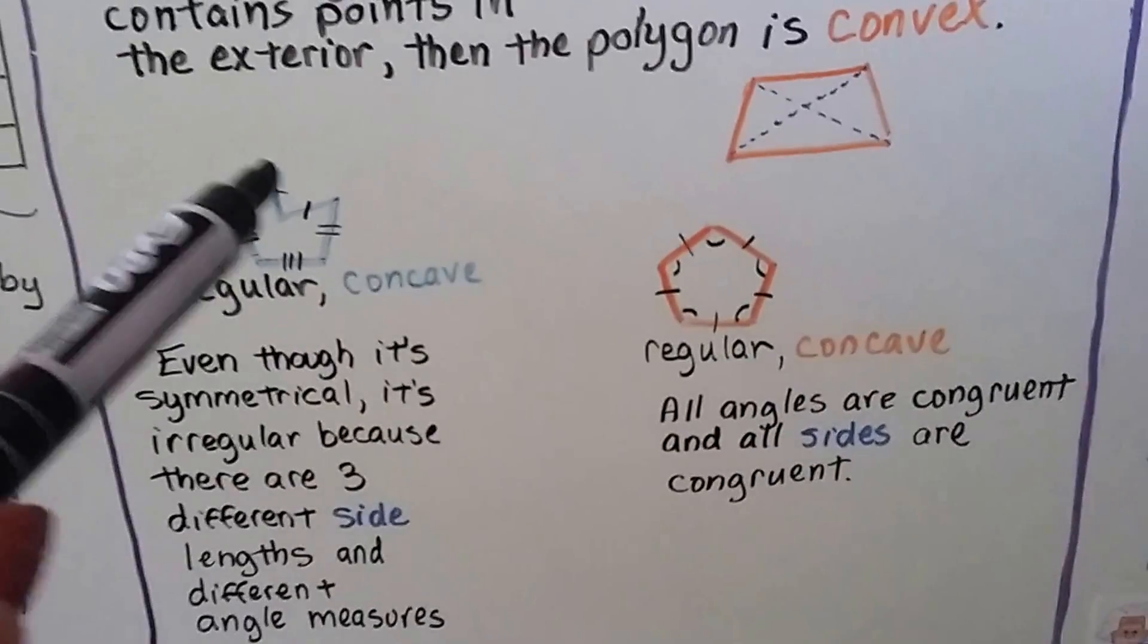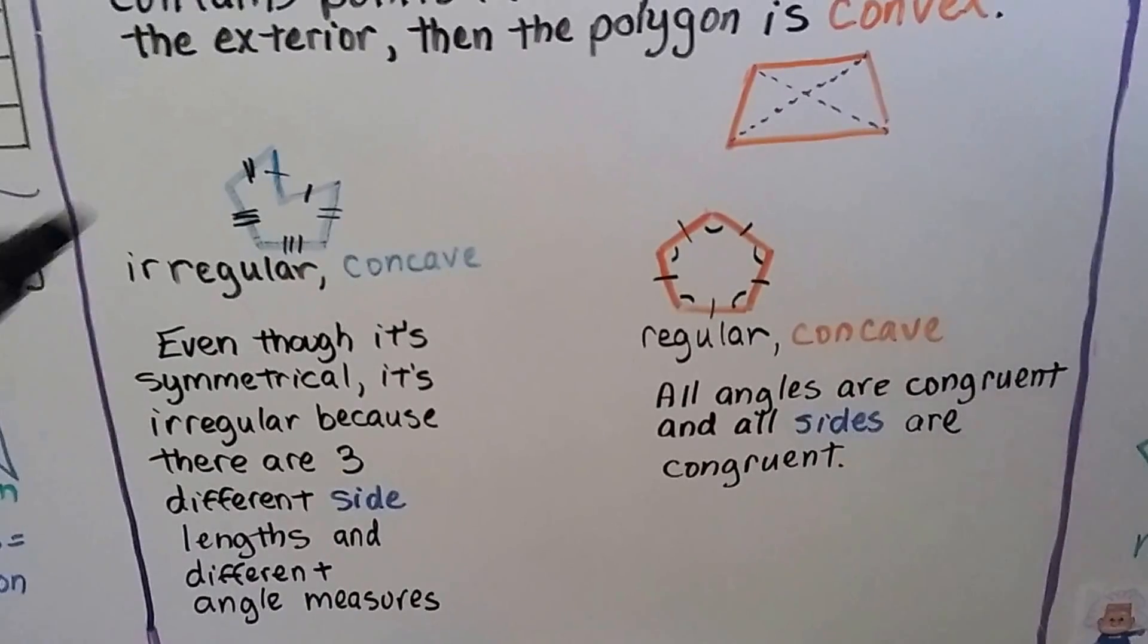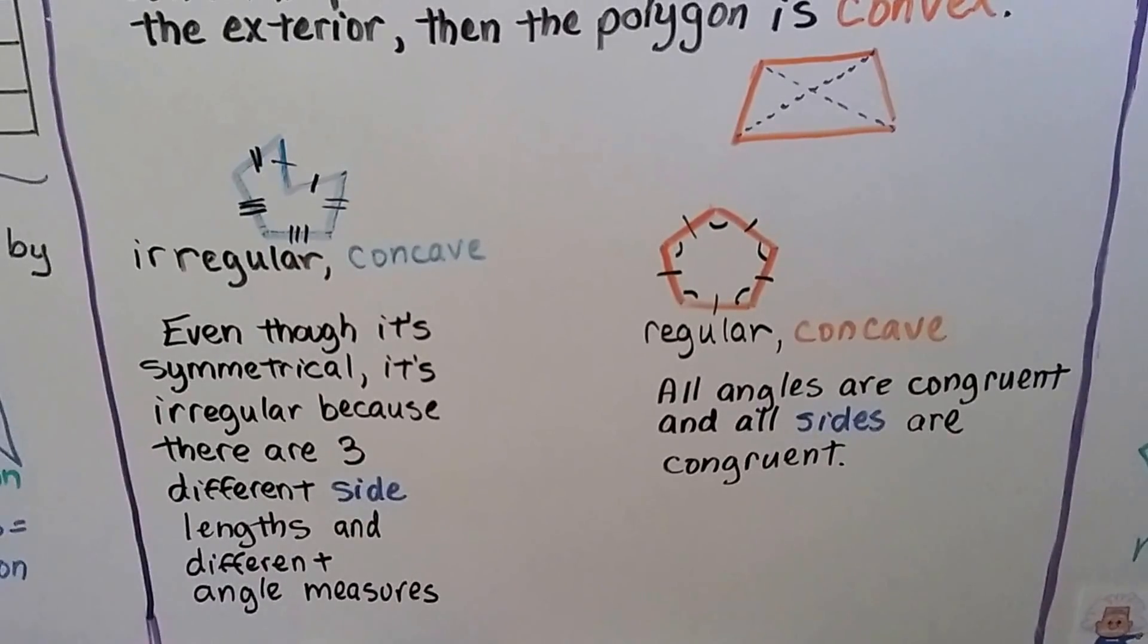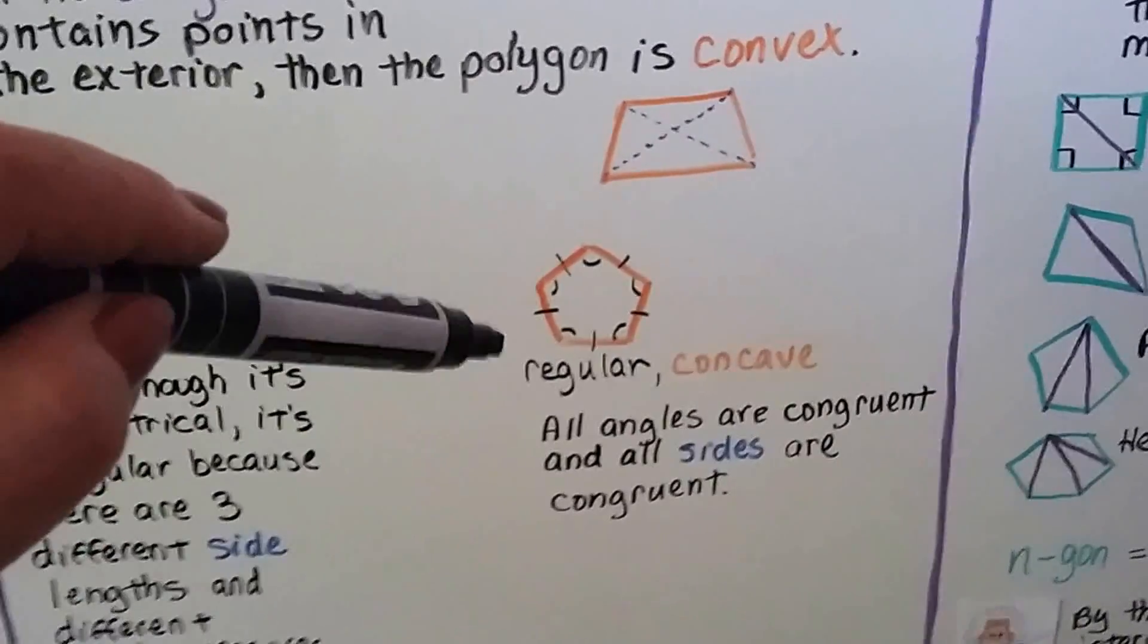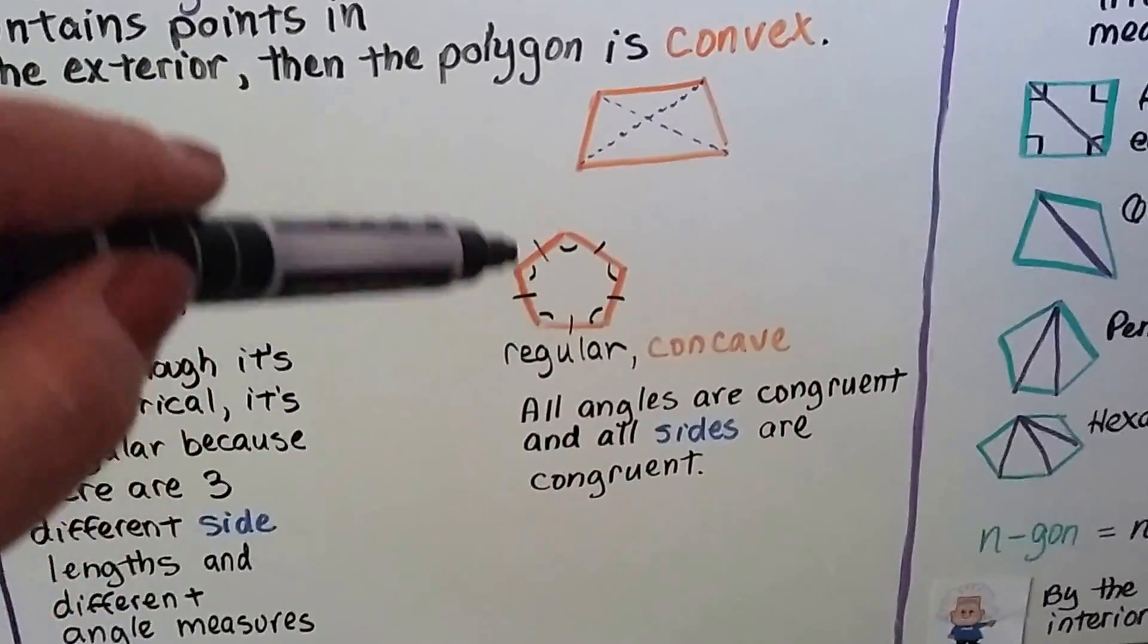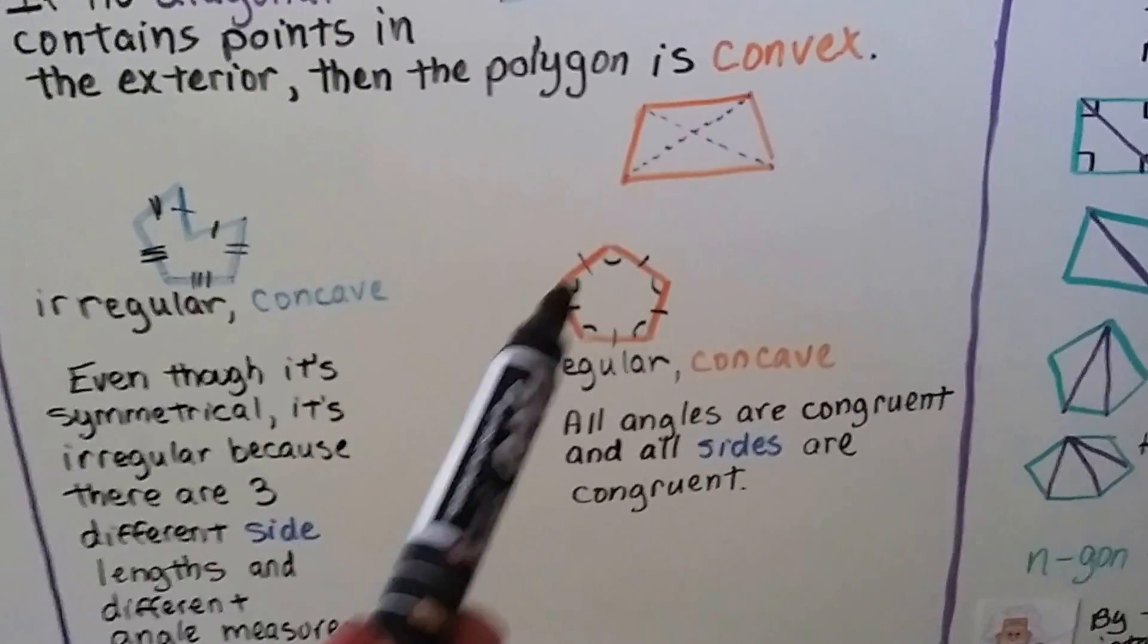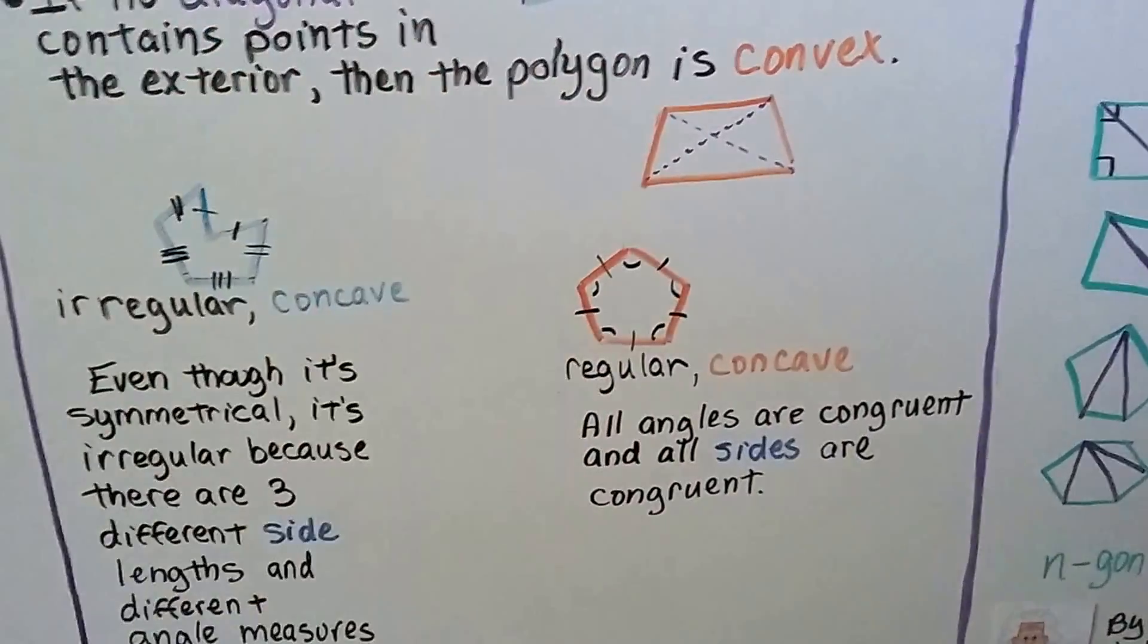We could do a diagonal across here, couldn't we? And even though it's symmetrical, it's irregular because there's three different side lengths and different angle measures. This one is a regular convex. Every side length is congruent, and every angle measure is congruent. And all the diagonals would be inside. All the vertices are punching outward.